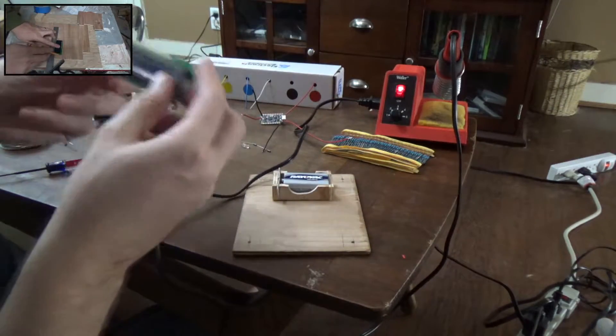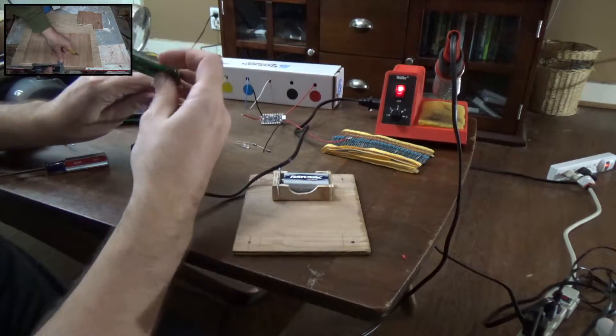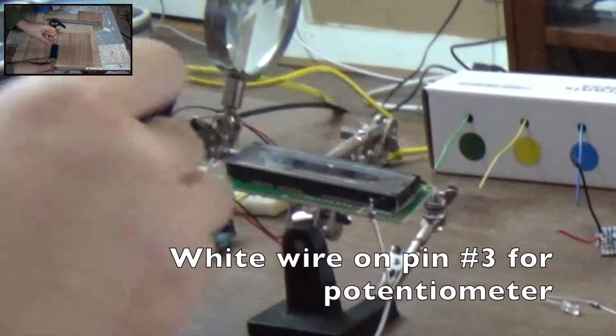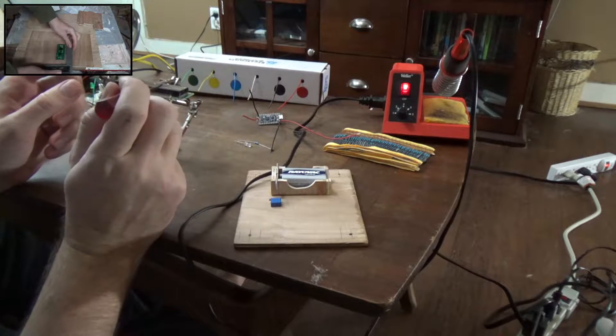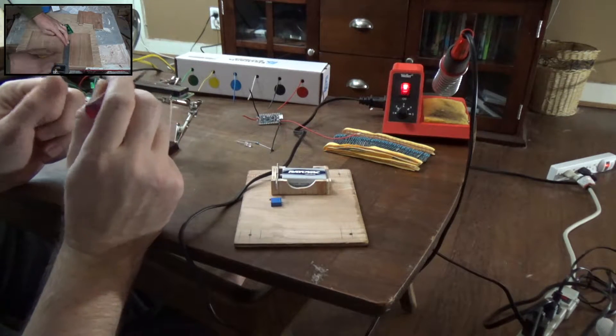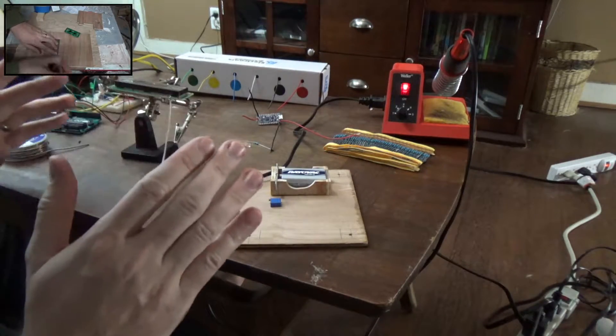There are 16 pins but we don't use all of them. I'm going to solder a white wire to pin 3 for the potentiometer. Pin 1 goes to ground and pin 2 goes to positive. We're going to use black and red again throughout this project. Black represents ground, red represents positive.